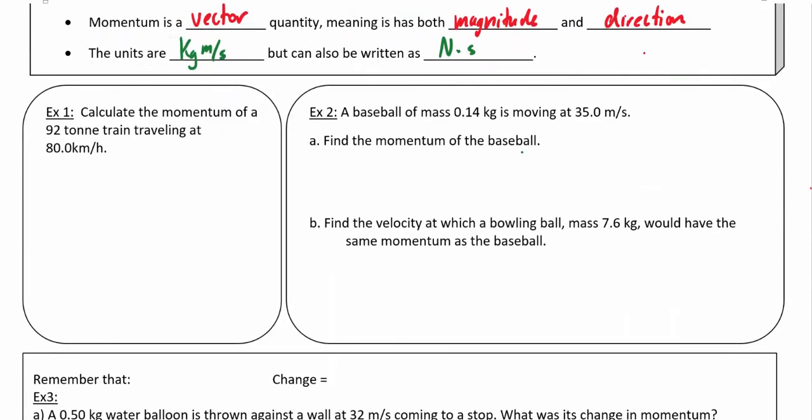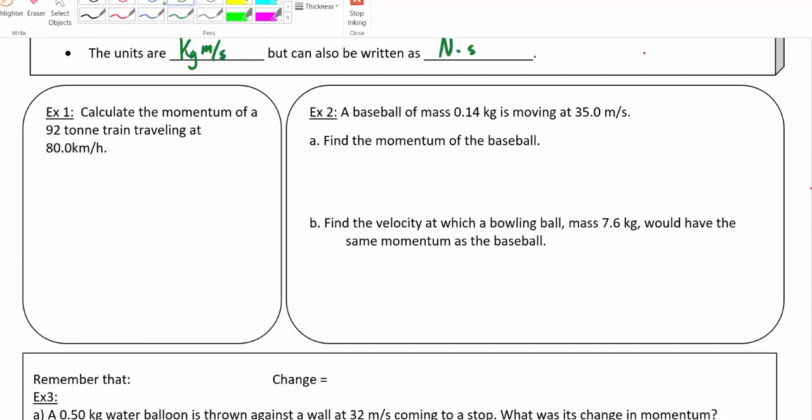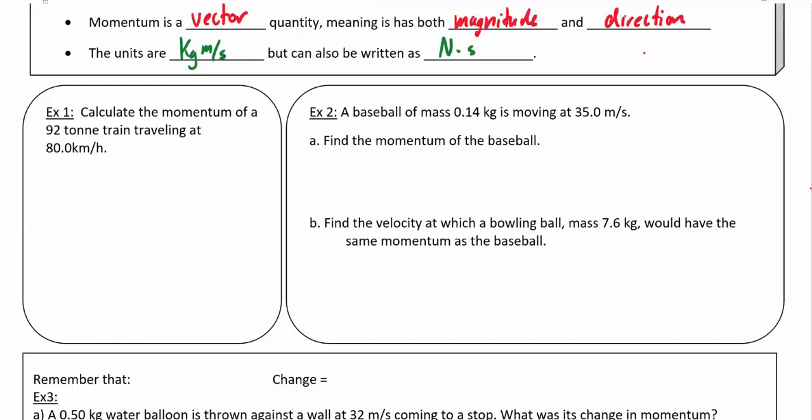So a couple of examples here. We're going to calculate the momentum of a train—about 92 tons traveling at 80 km/h. First, we'll convert 80 km/h into m/s by dividing by 3.6, so that's 22.2 m/s. Since momentum is just mass times velocity, 92,000 kg times 22.2 m/s gives us a pretty impressive 2.0 × 10⁶, or 2 million kg⋅m/s.